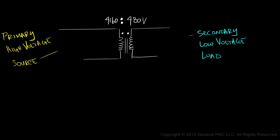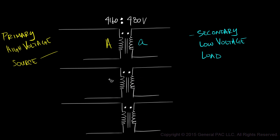What we have so far is a single phase transformer and we'll assign a capital A to the primary winding and lowercase a to the secondary winding. To make a three phase transformer, we'll simply add winding B and winding C.